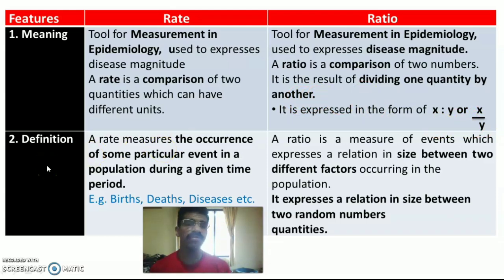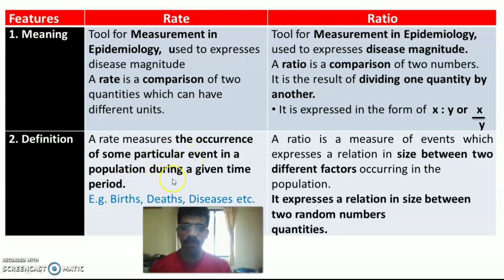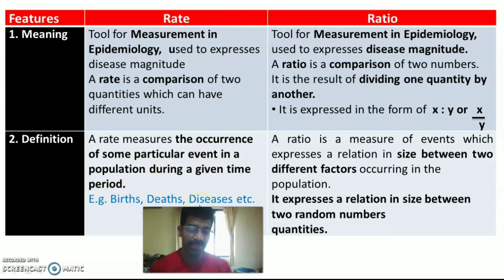Next is the definition of rate and ratio. In the concept of community health, the definition of rate is: a rate measures the occurrence of some particular event — especially a disease — in a population during a given time period, for example during one year. Examples of such events include births, deaths, disease, etc.